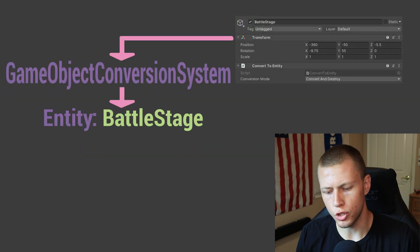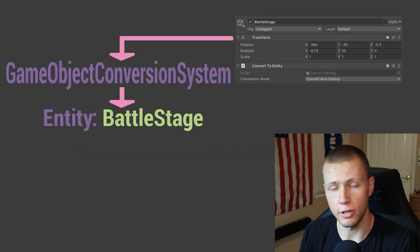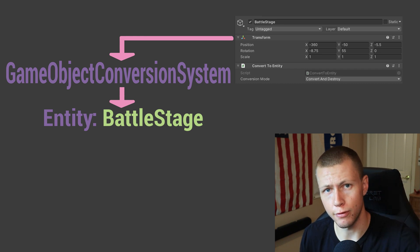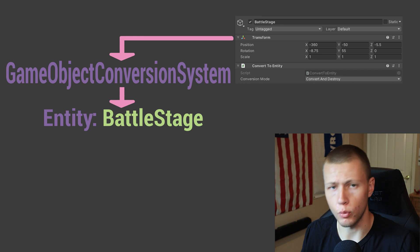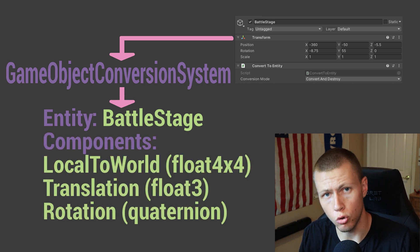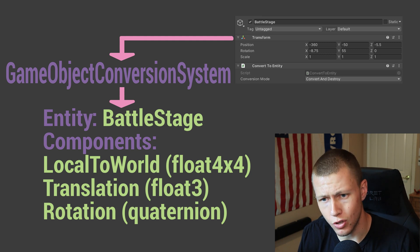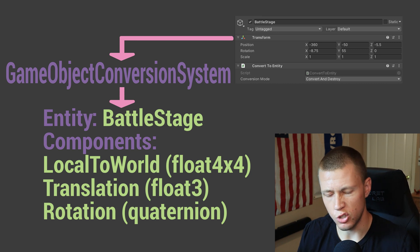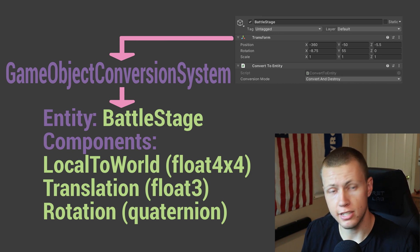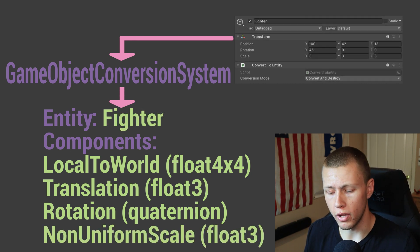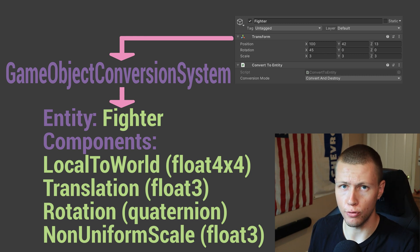The easiest way to assign the necessary components to an entity is using the conversion workflow — setting up a game object in the scene and attaching the Convert to Entity script. When you run the game, it converts the transform component into the LocalToWorld, Translation, and Rotation components. If the scale is set to 1,1,1 (default), no scale component is added at all; if it's anything other than 1,1,1, a NonUniformScale component is added.